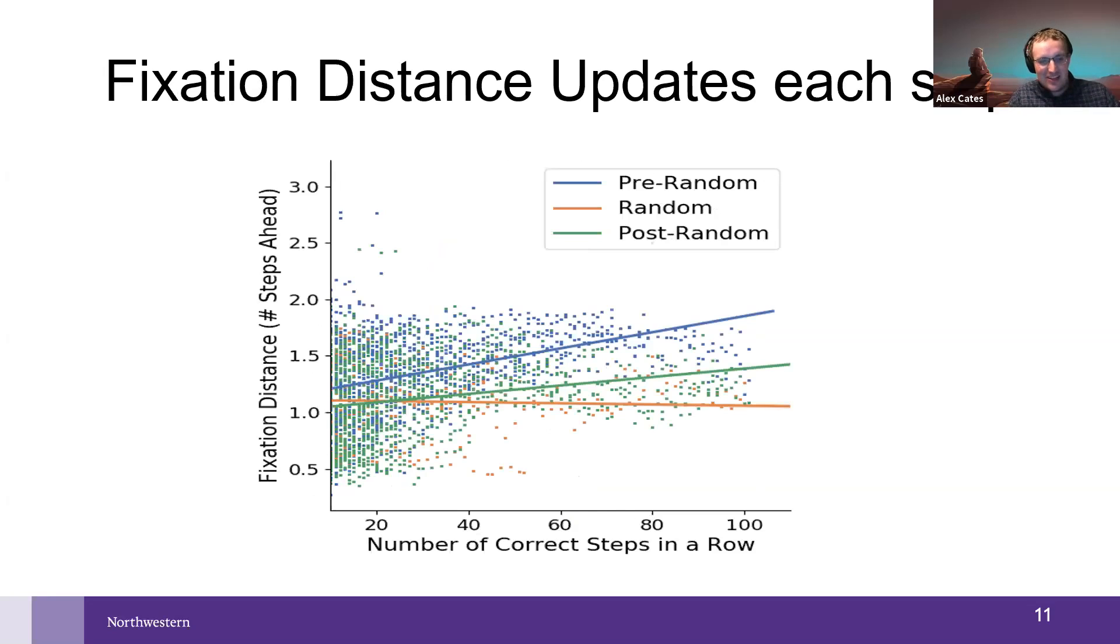Interestingly, we can look at how their fixation distance changes based on the number of correct steps in a row they complete. What we see is basically as they complete more correct steps in the blue, particularly before that catch trial, the fixation distance actually increases with each successive correct step. We have the random trial and it goes flat and almost negative where they're not trying to look farther ahead, because that might be because they don't know the sequence anymore. Then it slowly starts to recover after that random trial, but it's not at the same sort of slope that it was beforehand.